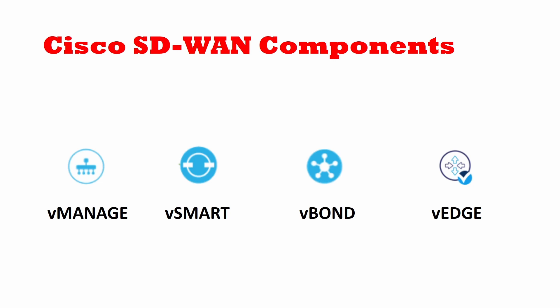vBond is more like a security front that decides which vEdge should come in and which should not. It acts as a security check before any vEdge comes into the environment. vEdge is nothing but CPE equipment — it's a next-level CPE that can have all the configurations required for traffic flow.